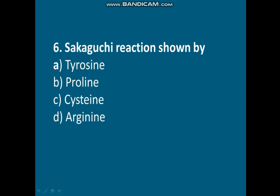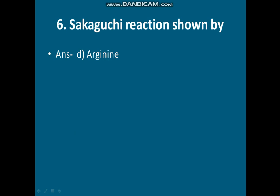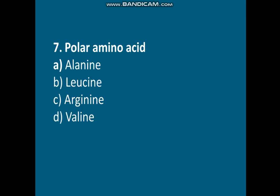Question six: the Sakaguchi reaction, an identification test for proteins mentioned in earlier protein notes. The question asks: the Sakaguchi reaction is shown by which amino acid? Options are Tyrosine, Proline, Cysteine, or Arginine. The correct answer is option D, Arginine. Arginine shows a positive reaction for the Sakaguchi test.